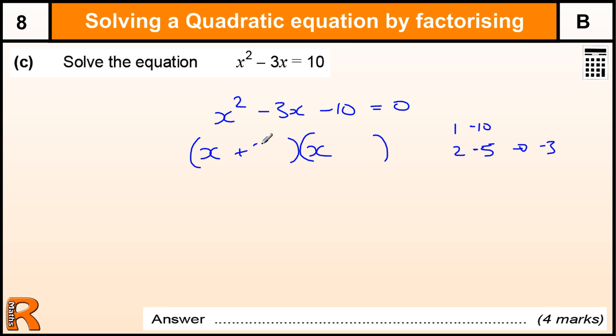So it's going to be plus 2 and minus 5 equals 0. Now to finish it off you need to say that the first bracket is equal to 0. So that tells us that x must equal minus 2.